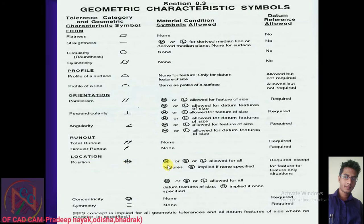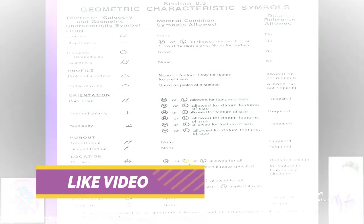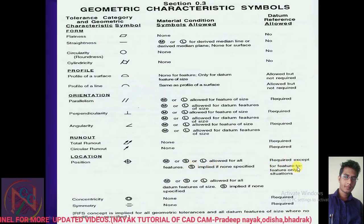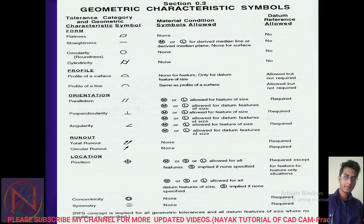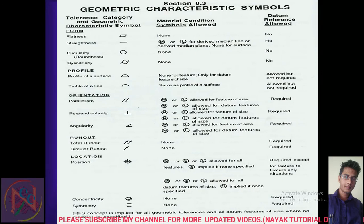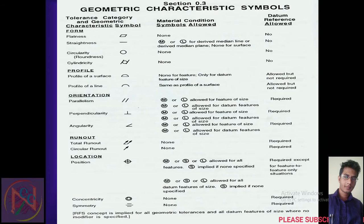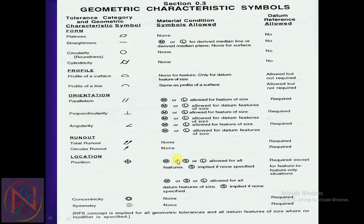For position, the material condition or least material condition is categorized and datum is required, except for the feature-to-feature-only situation. For concentricity, the maximum material condition requirement applies. For symmetry, the maximum material condition symbol requirement and datum requirement also apply.